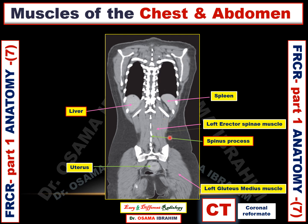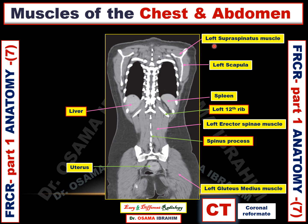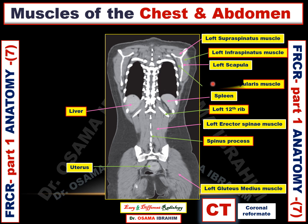This arrow refers to the erector spinae muscle. This arrow refers to the last rib on the left side, the left twelfth rib. This arrow refers to the scapula, and there are some muscles surrounding the scapula. This arrow refers to the left supraspinatus muscle, and the outer muscle on the scapular surface is the left infraspinatus muscle. The most internal one just adjacent to the scapular surface is the subscapularis muscle on the left side.